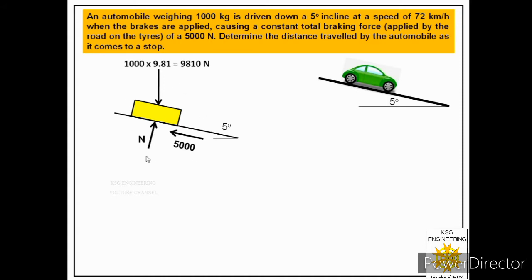These are the only forces acting in this situation. We consider the x-axis along the incline and the y-axis normal to the incline. Since the weight is inclined relative to those axes, we resolve it into two components: one along the surface and one normal to the surface. With the angle being 5 degrees, the component along the incline is 9810 sin 5° and the normal component is 9810 cos 5°.